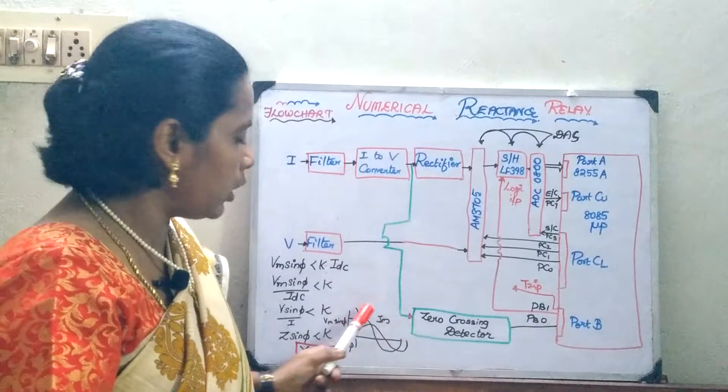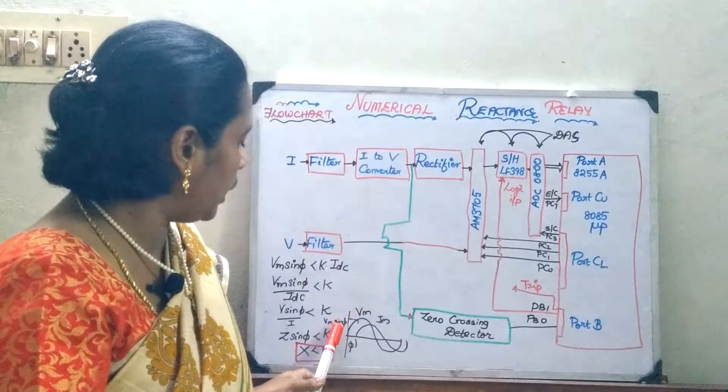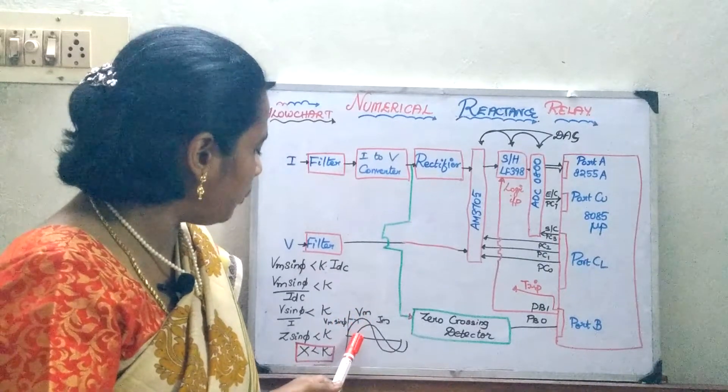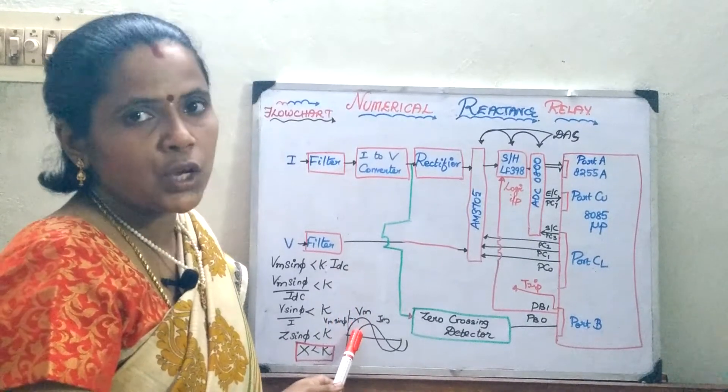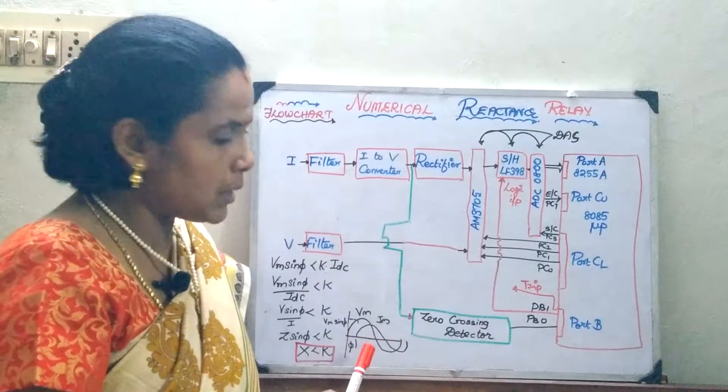And here whenever you are going to go through your diagram, here you are going to measure the instantaneous value of the Vm into sin phi at the point when the current reaches zero. So, at the time you are going to measure the reactance, that is the principle.